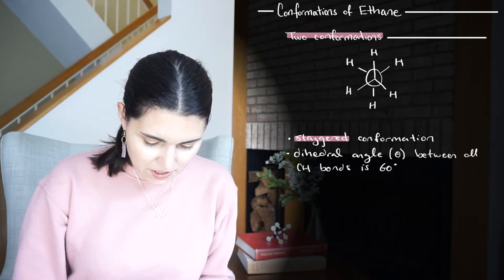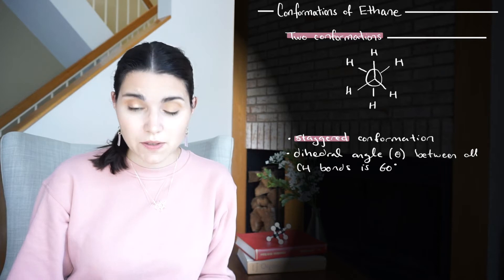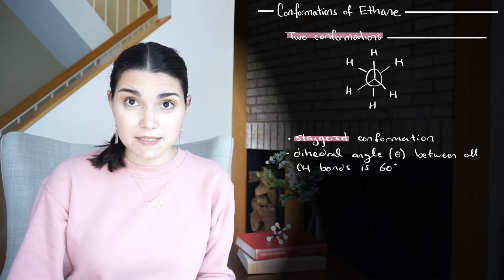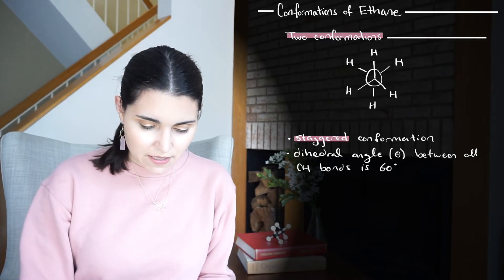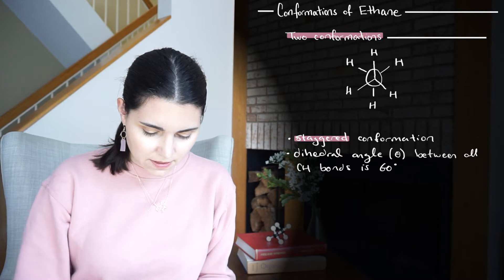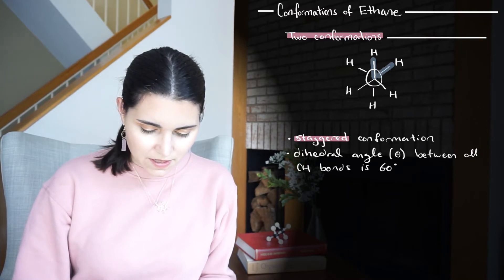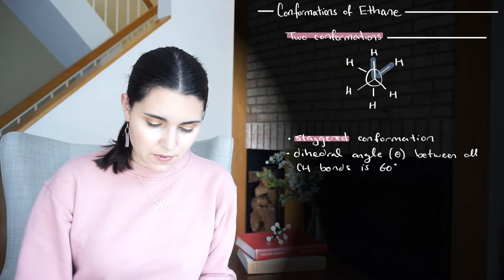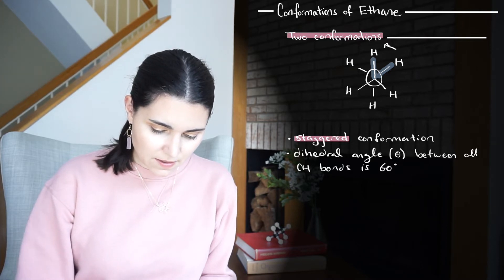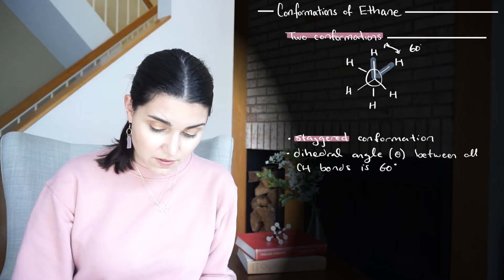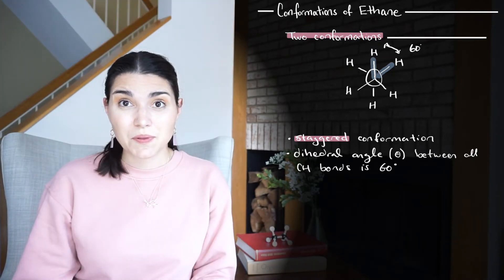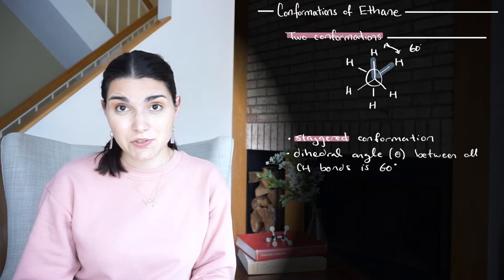In the staggered conformation, the dihedral angle between all of the CH bonds is 60 degrees. A dihedral angle is the angle between one CH bond on one carbon and another CH bond on the other carbon. So between these two bonds here, that angle is 60 degrees. We use the Greek symbol theta to represent dihedral angle.